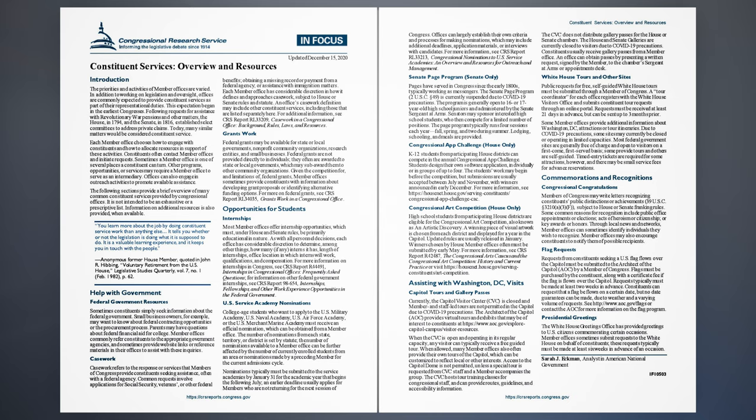Senate Page Program (Senate only). Pages have served in Congress since the early 1800s, typically working as messengers. The Senate Page Program (2 U.S.C. Section 49) is currently suspended due to COVID-19 precautions. The program is generally open to 16- or 17-year-old high school juniors and administered by the Senate Sergeant-at-Arms. Senators may sponsor interested high school students, who then compete for a limited number of positions. The Page Program typically runs four sessions each year: fall, spring, and two during summer. Lodging, schooling, and meals are provided.